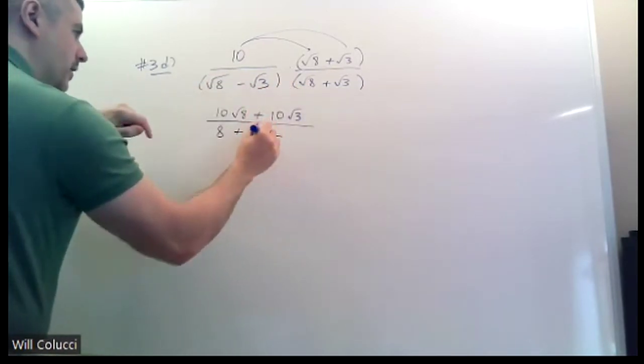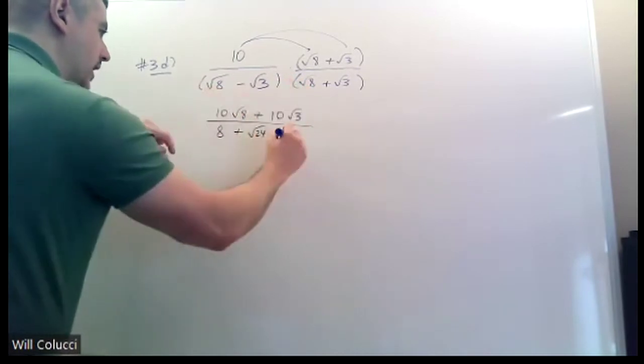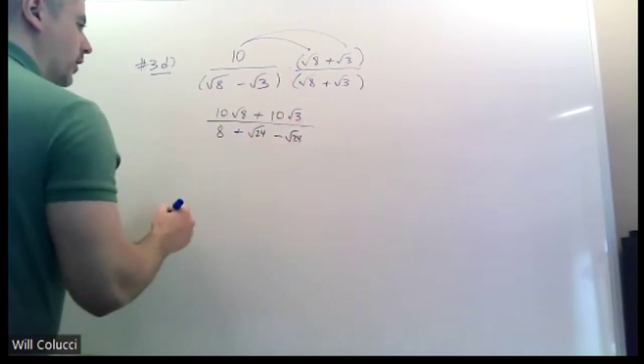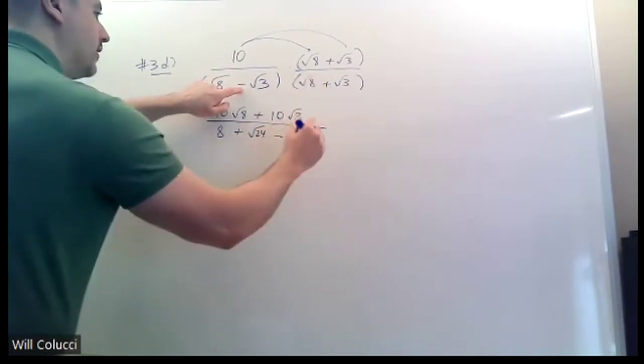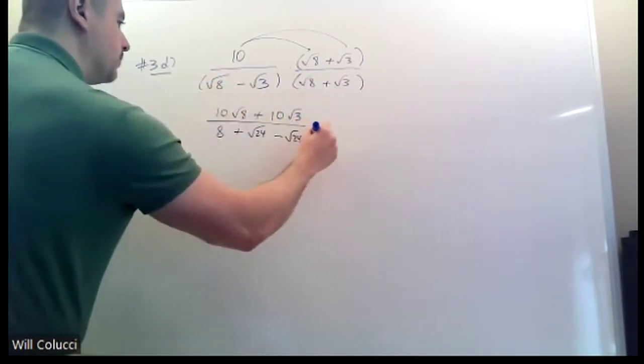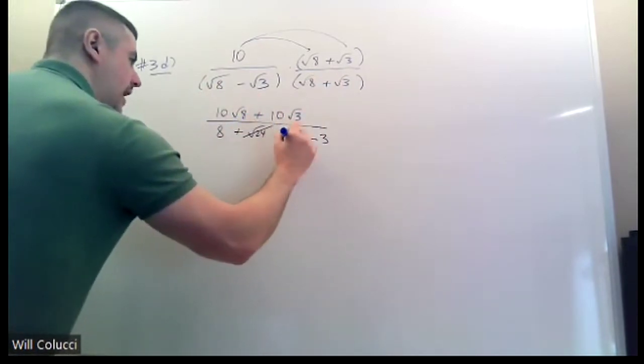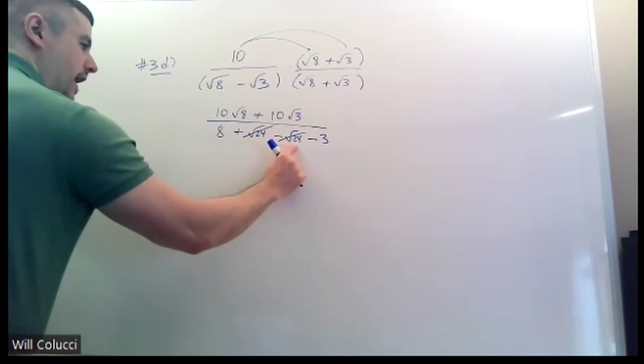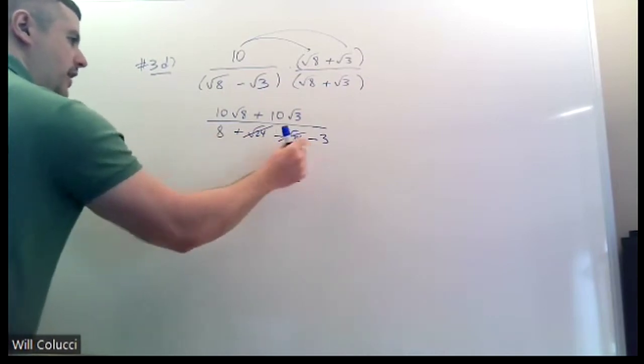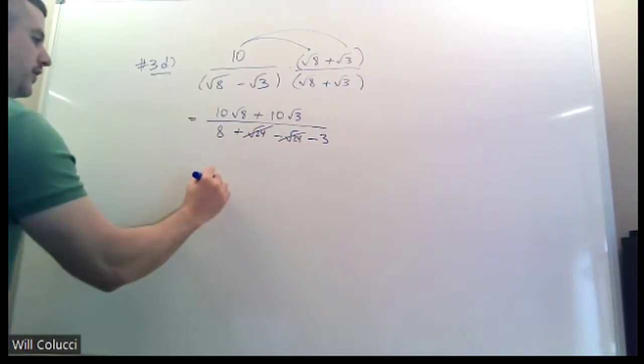Over here, you have a negative radical 3 times radical 8. That's negative radical 24. Those are going to cross out. That's the point of this. Negative times a positive is also negative. Radical 3 and radical 3 make 3. Cross out those positive radical 24, take away radical 24. They cross out. You get 8, take away 3 on the bottom, which is 5. Yay!